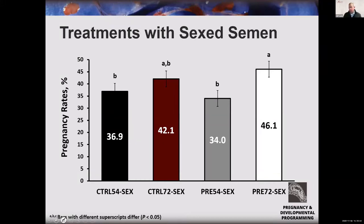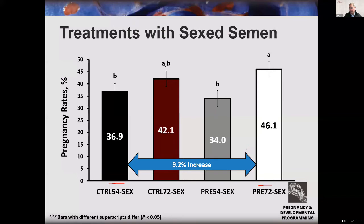Looking at all sexed semen treatments, the standard co-synch CIDR protocol yields about 36.9% pregnancy rates with sexed semen. By adding pre-synchronization and delaying timed AI to 72 hours, we see about a 9.2% increase. That's a significant improvement and provides an opportunity to use sexed semen in a way that makes it much more normal in terms of pregnancy rates, especially for producers using a fixed timed-AI protocol.